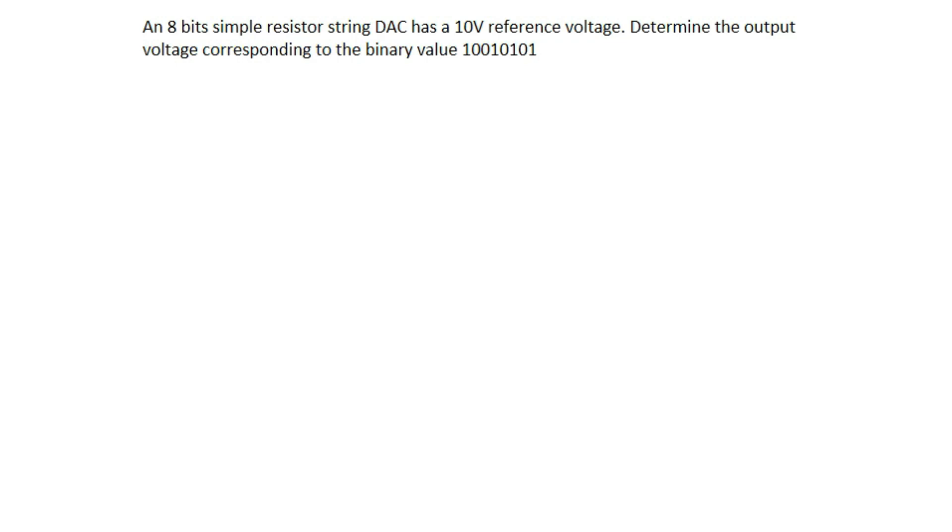Here we have a question on electronics that sees an 8-bit simple resistor string DAC, that is Digital to Analog Converter, has a 10 volt reference voltage. Determine the output voltage corresponding to the binary value 10010101.